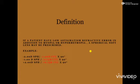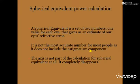Since the cylinder power is very small in these cases, we can use the spherical equivalent power calculation. A spherical equivalent is a set of two numbers — one value for each eye — that gives us an estimate of the eye's refractive error. This means if both eyes have different power types, such as one eye being purely spherical and the other being spherocylindrical, we apply this calculation.